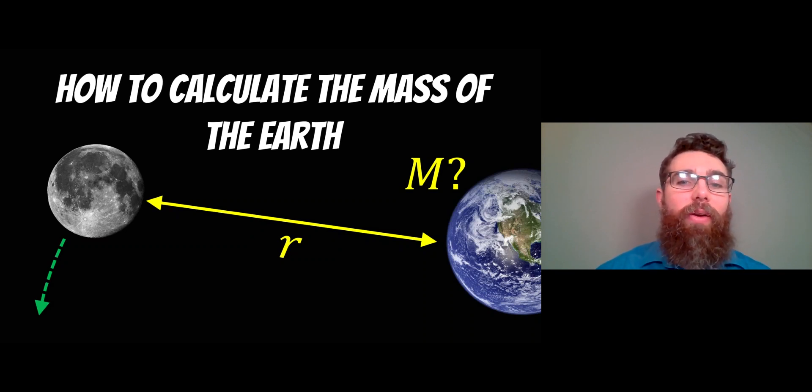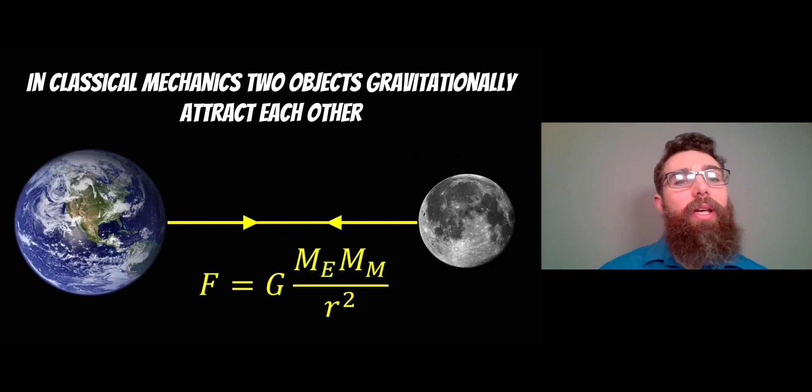Welcome to this video about how to calculate the mass of the Earth. In classical mechanics, two objects gravitationally attract each other with some force. It relates to the mass of the two objects and the separation between them, which is r.